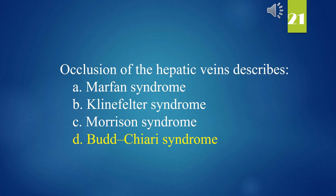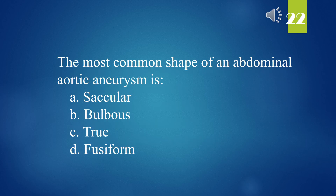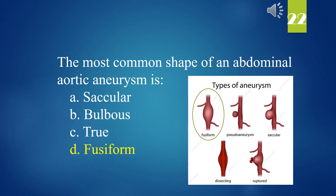The most common shape of an abdominal aortic aneurysm is: A. Sacular. B. Bulbous. C. True. D. Fusiform. The answer is D. Fusiform.